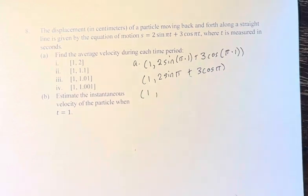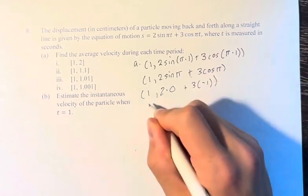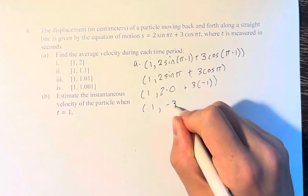Which is going to be 2 times 0 plus 3 times negative 1, which gives us the point (1, -3).